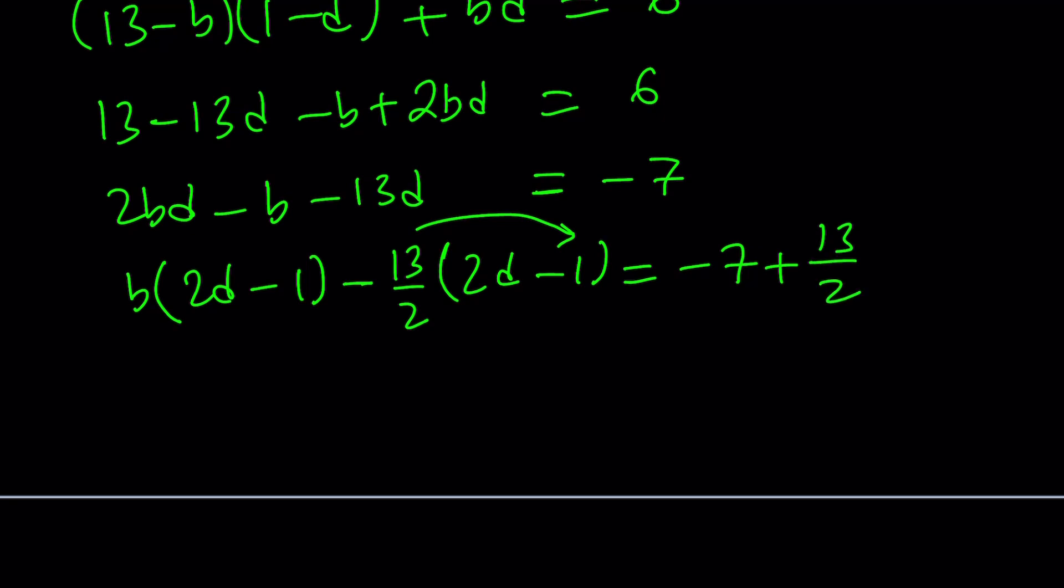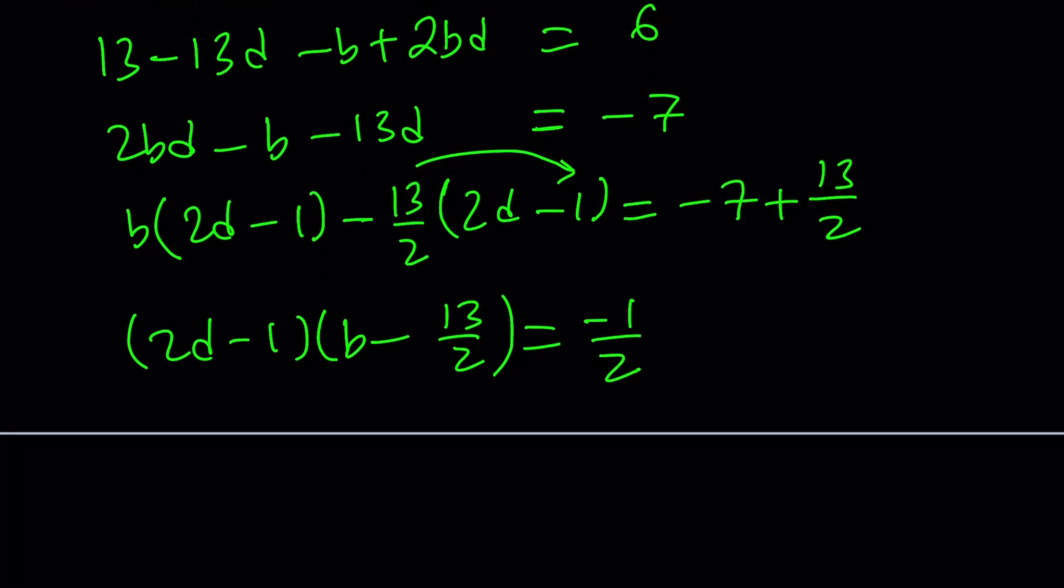So, that just means that I added 13/2 to both sides. So, this is going to be -7 + 13/2. We have to add the same thing on both sides, so we don't change the equation. And now, we didn't.